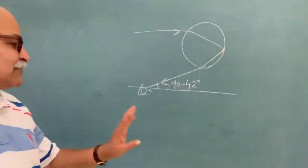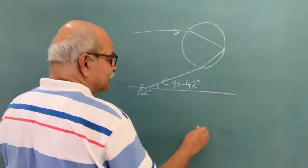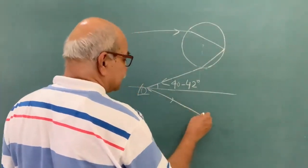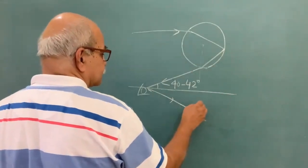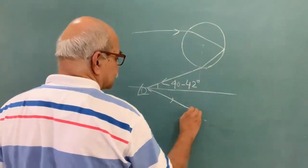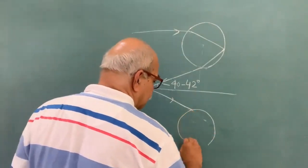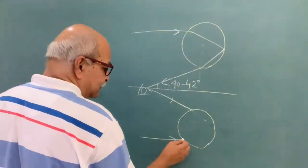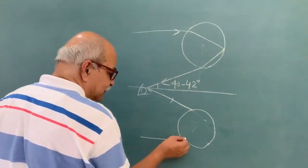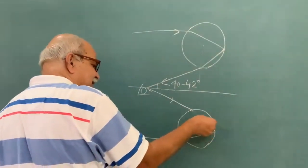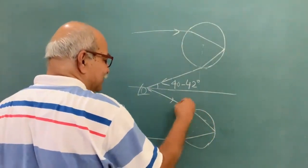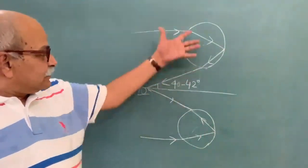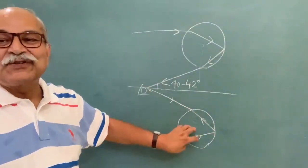Let me draw one of them on the board — just reflect this whole geometry here. Suppose this is the 42-degree line and the drop is like this — just reflecting the geometry. Light enters somewhere here, there is refraction so it goes like this, then there is a reflection, it comes out, and once again goes away from the normal — and therefore it reaches my eye. Same geometry, just reflected. This drop also sends you light — red, green, blue, everything.